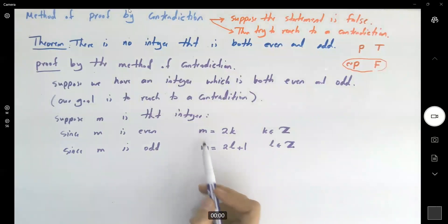Guys, take a look. I have M equals 2K, M equals 2L plus 1. So M and M are equal to each other. Let's set 2K and 2L plus 1 equal to each other.